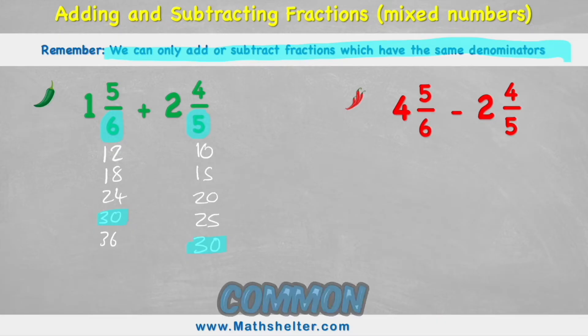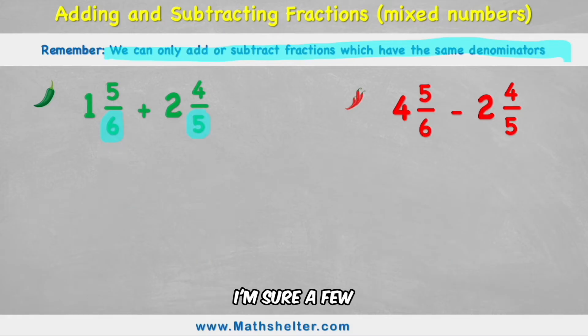Therefore, 30 is a lowest common multiple that I can use for my new denominators. Or I'm sure a few of you realize that if I just simply multiply 6 by 5, I'll get 30 also.